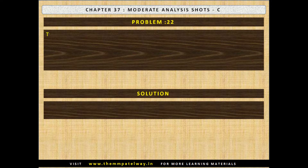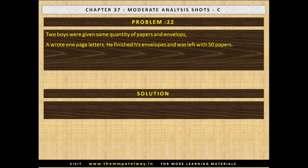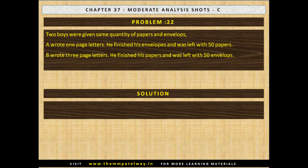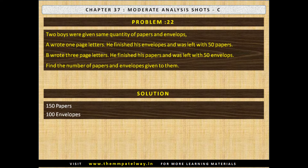Problem No. 22. Two boys were given the same quantity of papers and envelopes. A wrote one-page letters; he finished his envelopes and was left with 50 papers. B wrote three-page letters; he finished his papers and was left with 50 envelopes. Find the number of papers and envelopes given to them. The solution is they were given 150 papers and 100 envelopes.